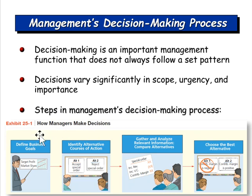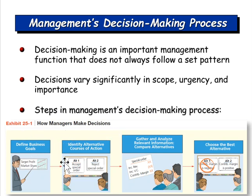When talking about decision-making, there are some basic steps managers follow. Typically you define a goal, identify alternative courses of action, gather and analyze relevant information, compare those alternatives, and then choose the best alternative.